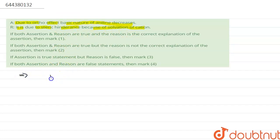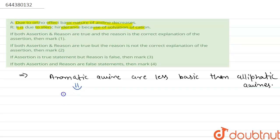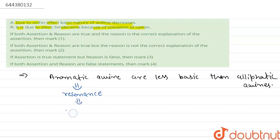We know that aromatic amines are less basic than aliphatic amines. The reason for this lower basicity is resonance — because of resonance, the lone pair of electrons on the nitrogen atom gets delocalized over the benzene ring and is thus less available for protonation.